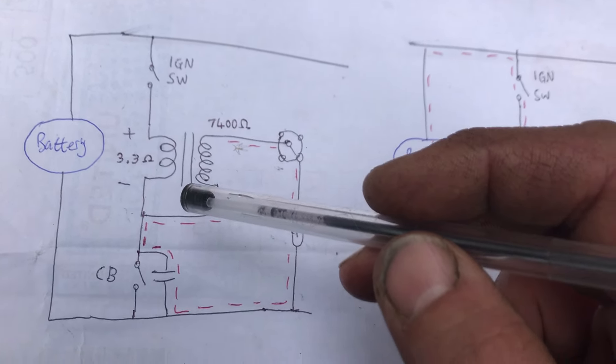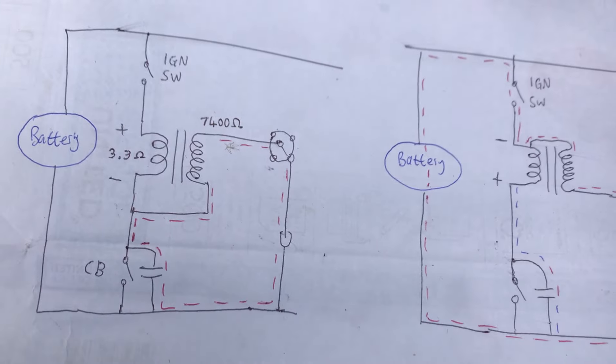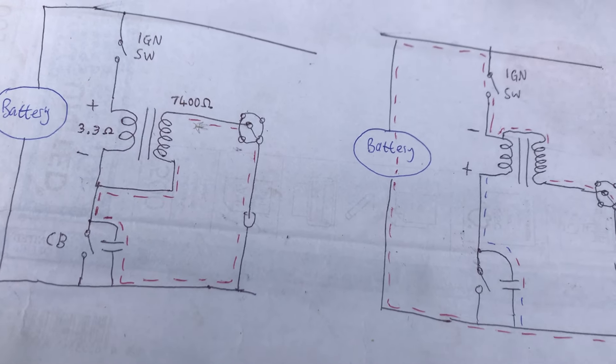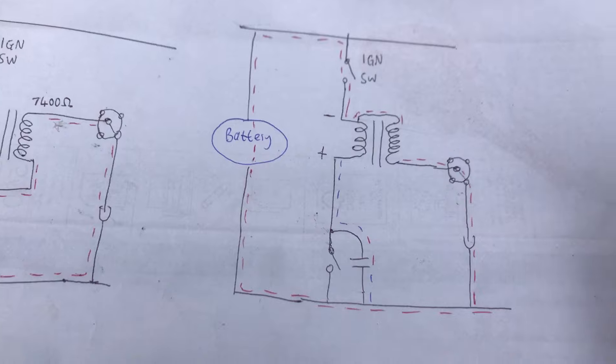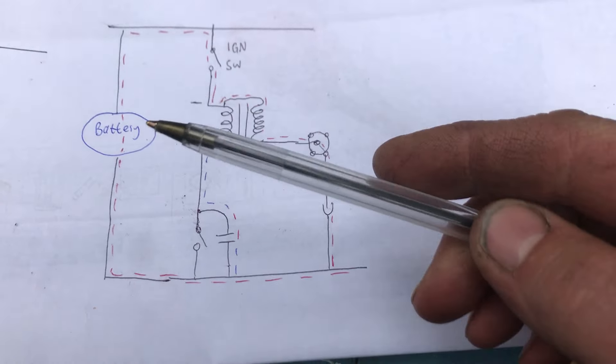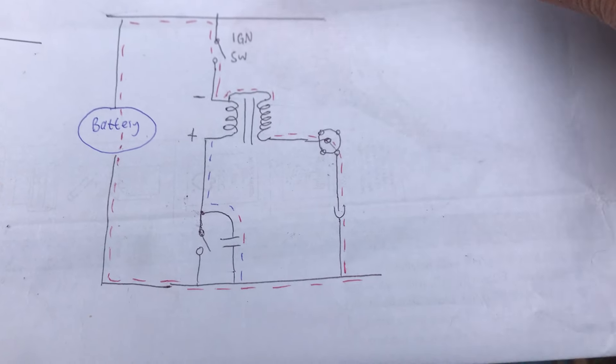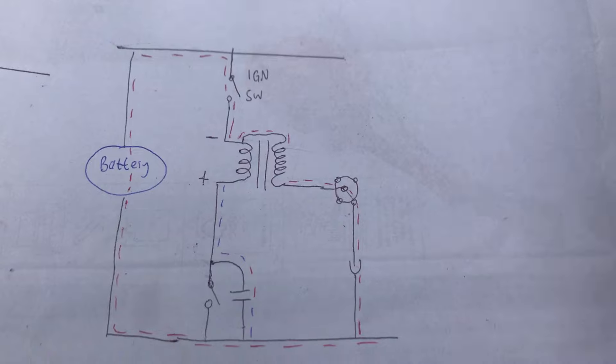And speak of a fatter spark with a negative earth system or positive earth system one being better than the other is balderdash. You may experience one side of the electrode eroding at a different way to the other but that's not important.